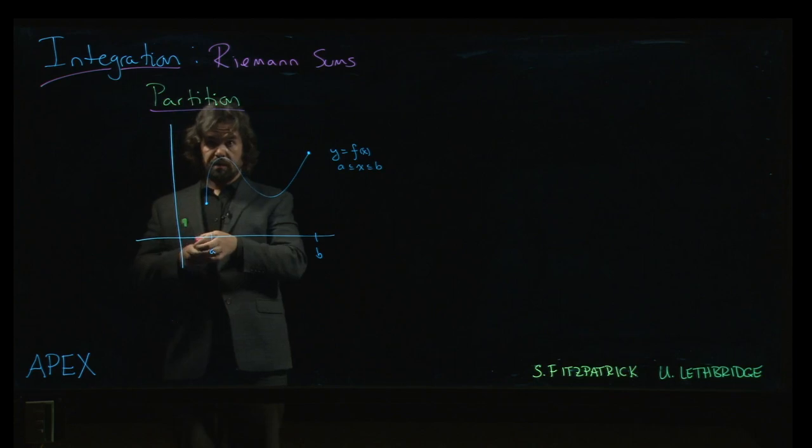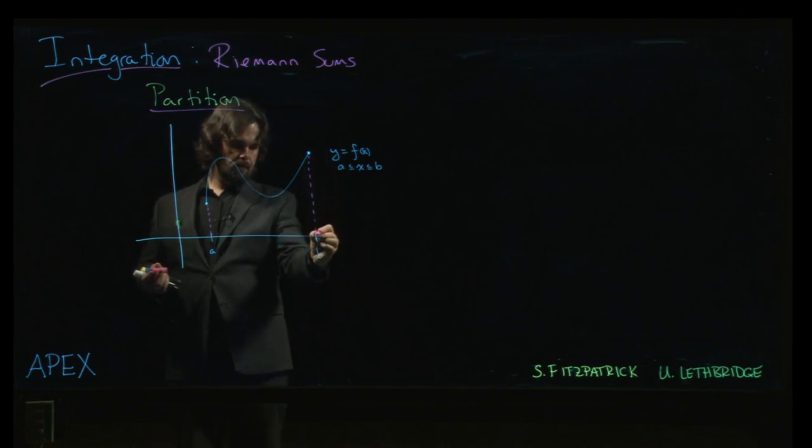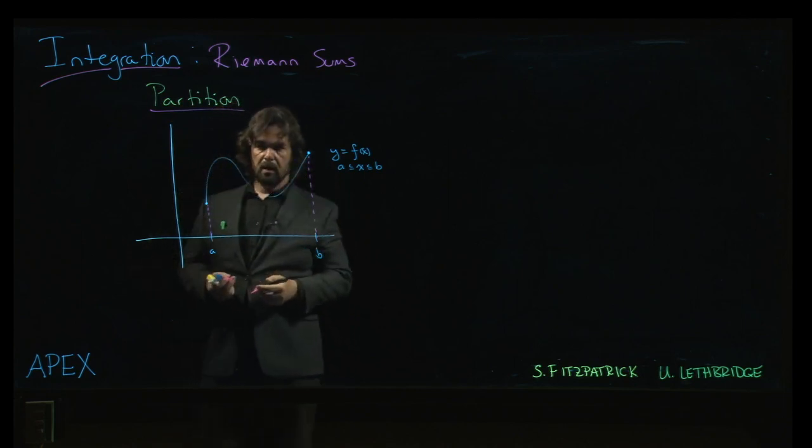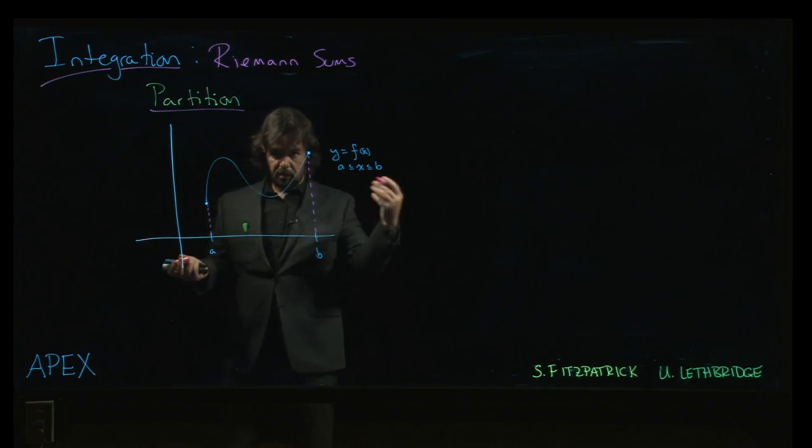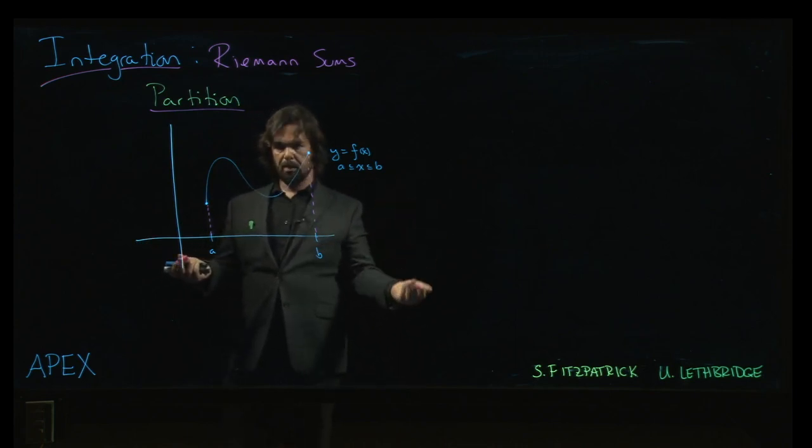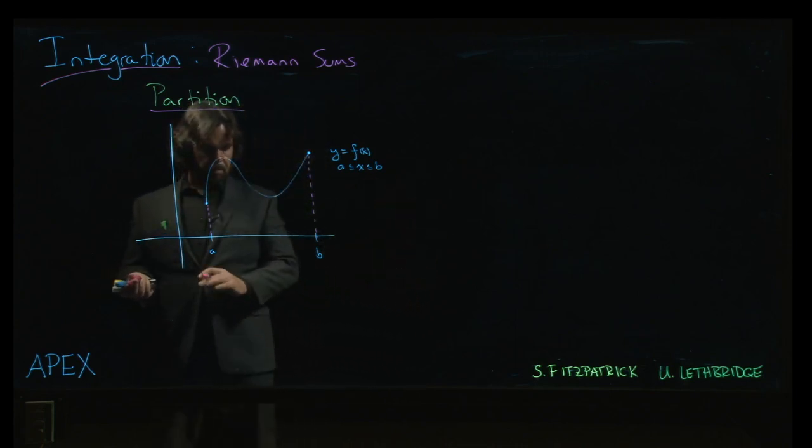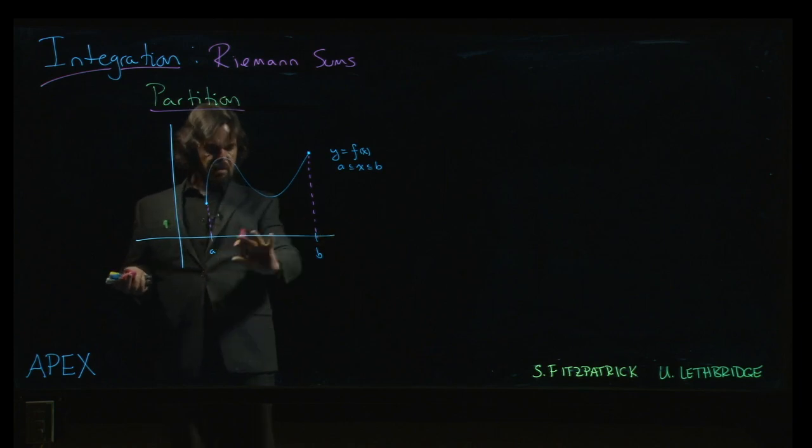And we want to find the area under the graph over that interval. So we go through this idea of approximating by rectangles that we've been playing around with. The partition really just refers to the interval here, the x interval. But we'll talk a little bit about how that translates into the y values as well.